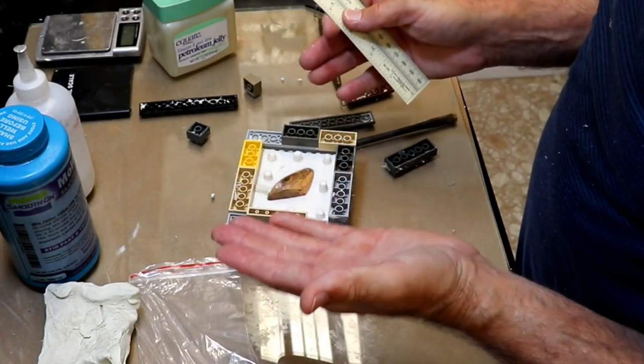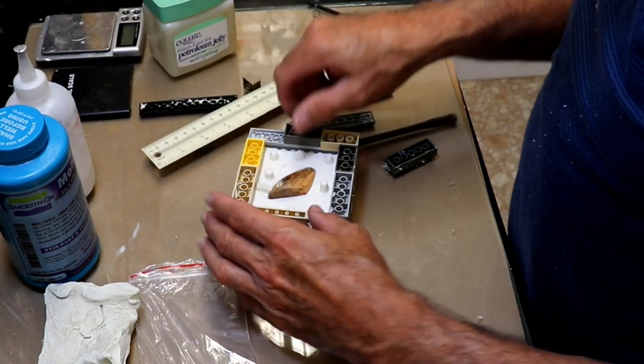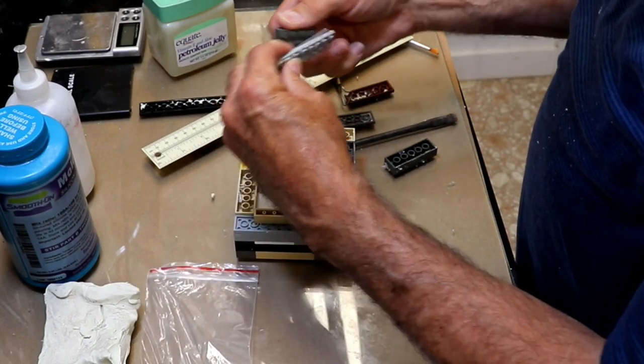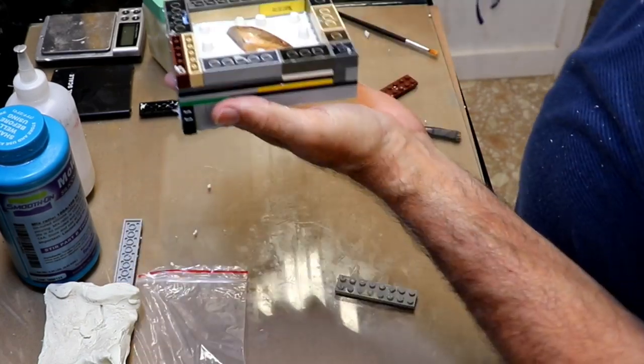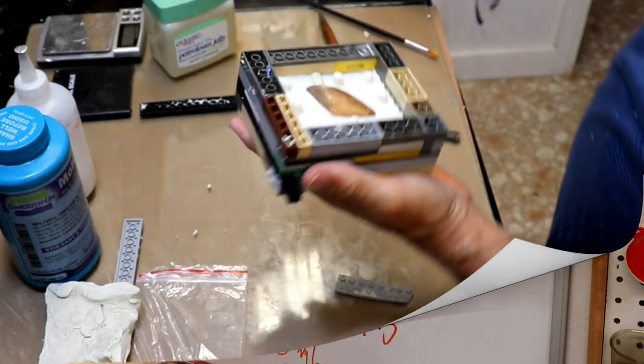So before I get too far along building these sides up I need to know how far I need to go and right there is probably a bit much. So I'm going to take off a half a block. Okay it's built up. I got about 3/16th cover and that's really all I need.